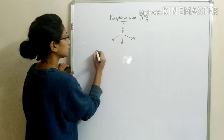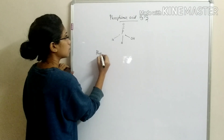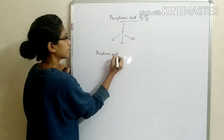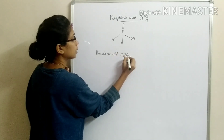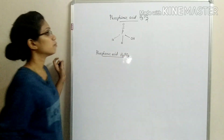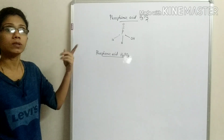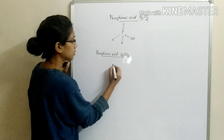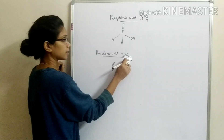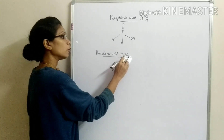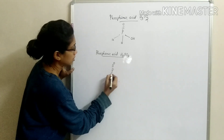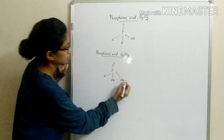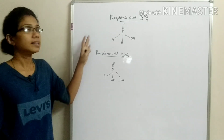Now, phosphorous acid, H3PO3. Phosphorous acid is H3PO3. If you put it in a structure, it has a double bond O. Then you place 3 hydrogen groups. That is the structure.